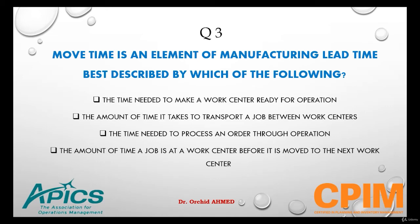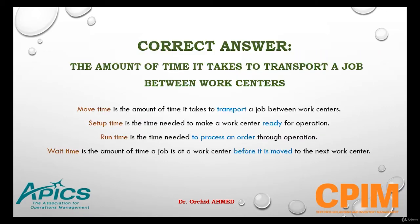Options are: the time needed to make a work center ready for operation; the amount of time it takes to transport a job between work centers; the time needed to process an order throughout an operation; or the amount of time a job is at a work center before it is moved to the next work center. Move time is the amount of time it takes to transport a job between work centers.